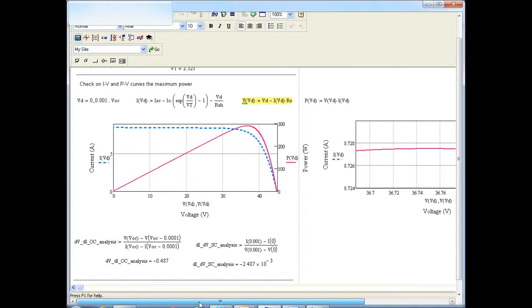And we can also do some more checks to see whether our model matches well with the data sheet values. And those checks are the slopes of the IV curve obtained from this analytical model. So the first one is the dV over dI under open circuit condition. It comes out to be minus 0.487 from the analytical curve. And it matches almost exactly to the value that we got from the data sheet.